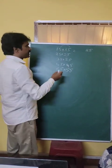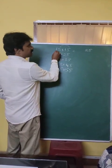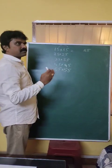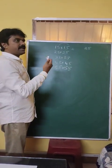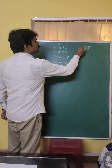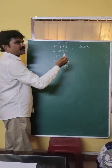5 into 5, 25. Here 1 is there. So after 1, the next number is 2. So 1 into 2, it is 2. So the answer is 225.